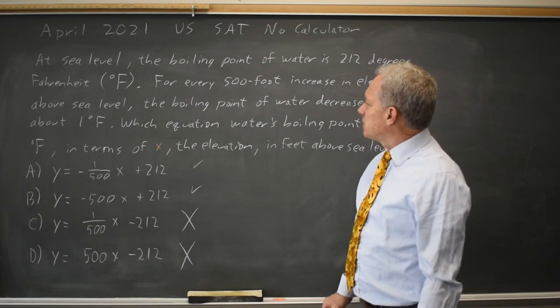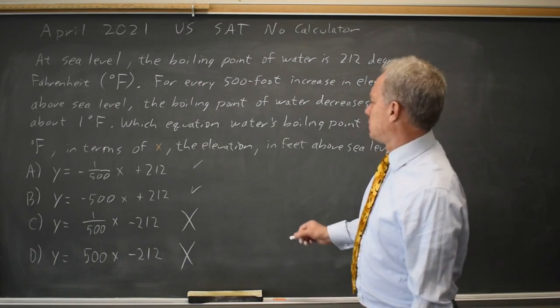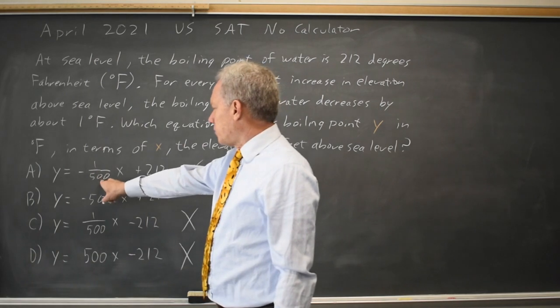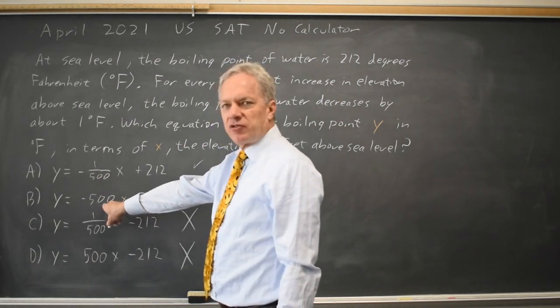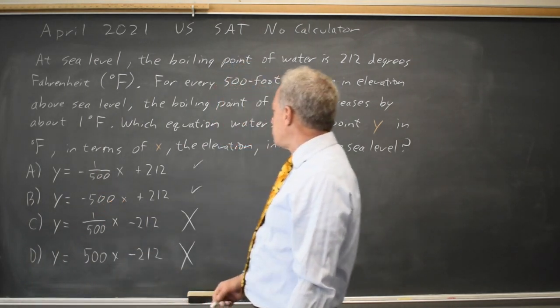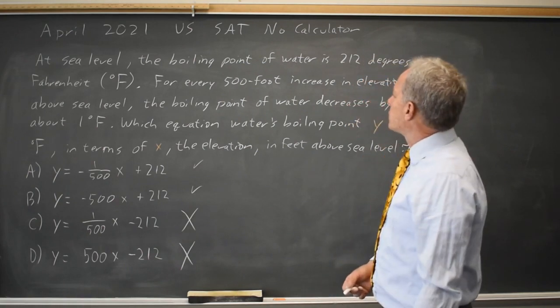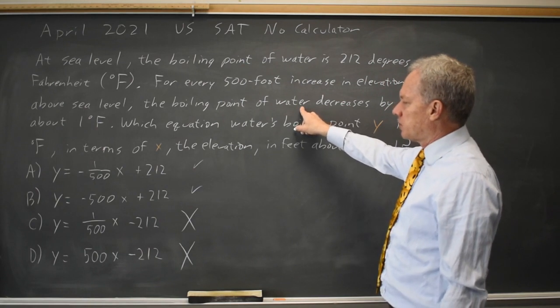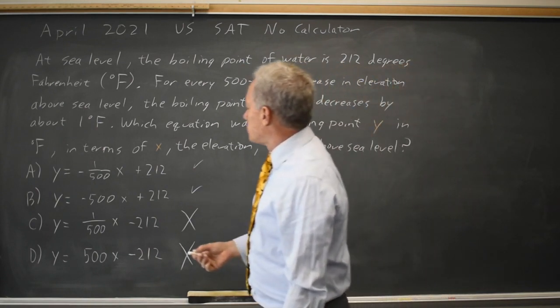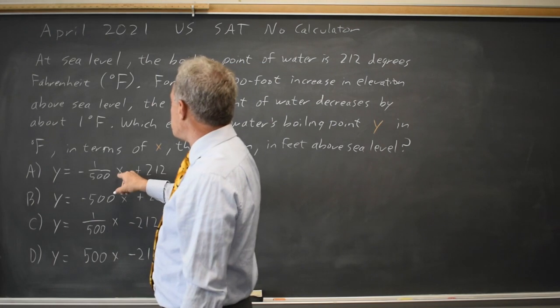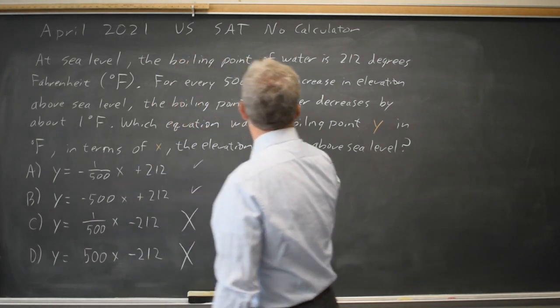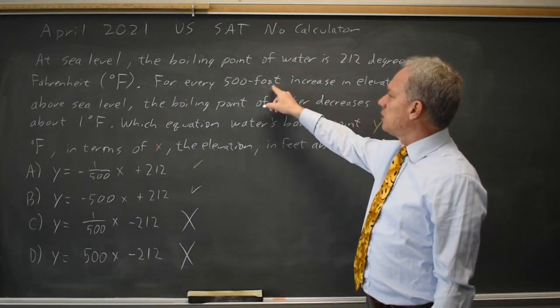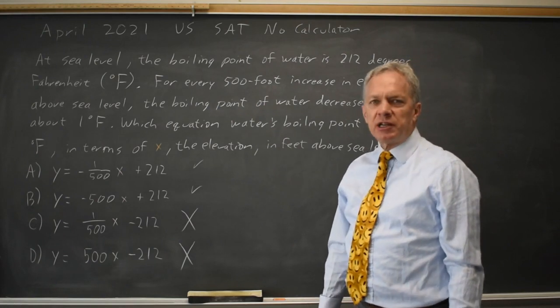The next question they're asking is, is this a negative 1 over 500 or a negative 500 as the slope? We're told for every 500 foot increase in elevation, boiling point decreases by about 1 degree Fahrenheit. So when X equals 500, the elevation is 500, our boiling point should go down by 1 degree.